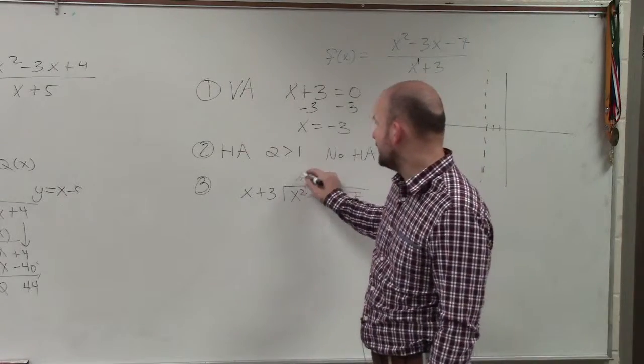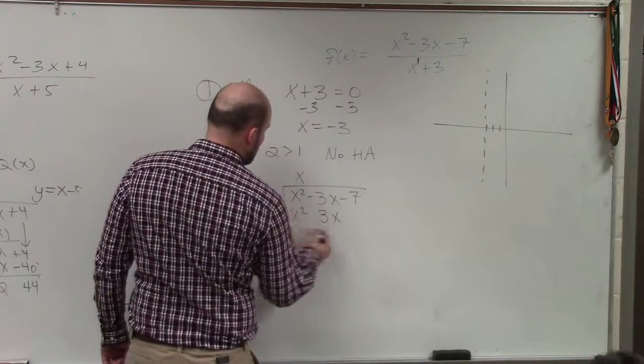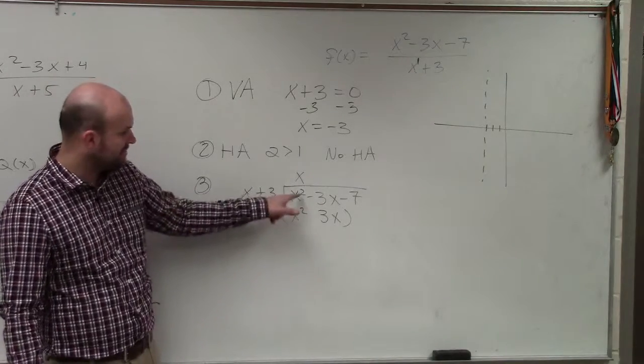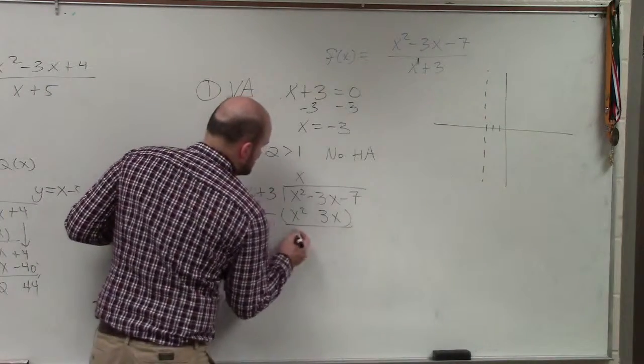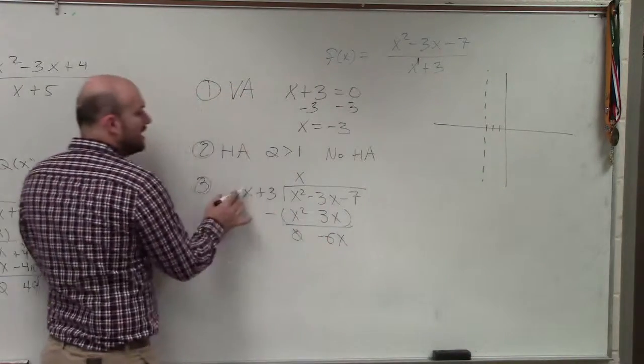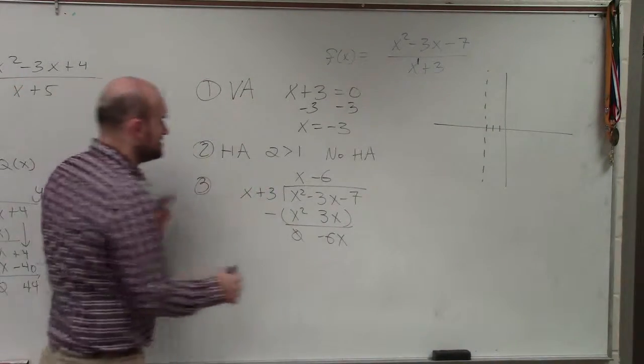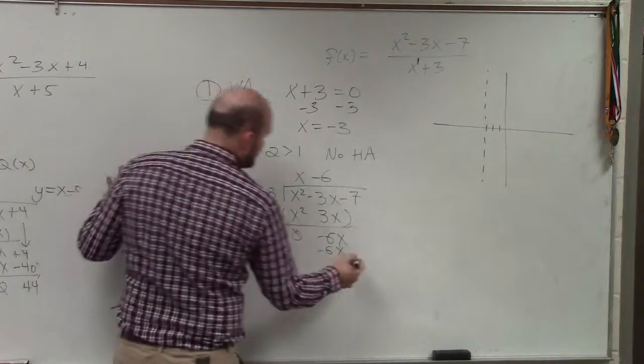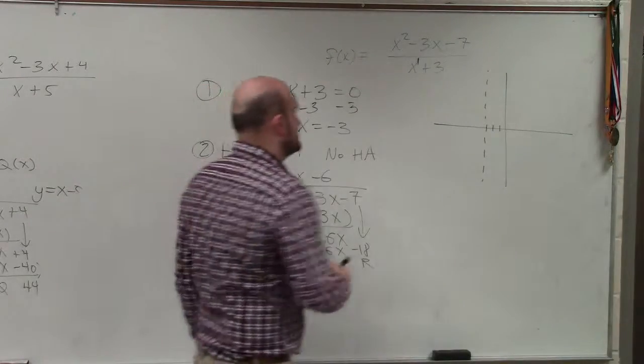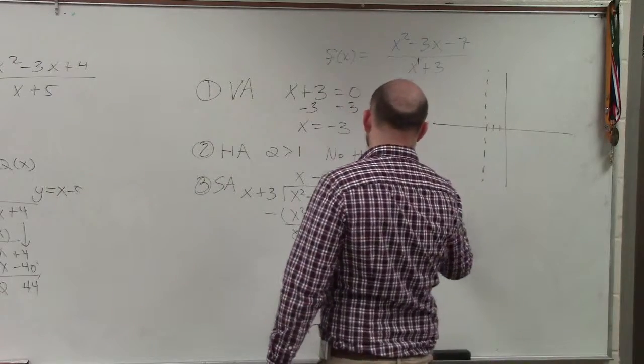x divides into x squared x times. Multiply x times x is x squared. x times 3 is 3x. Remember, you're subtracting the whole row. So you can distribute and make that a positive. Or you can say x squared minus x squared is 0. Negative 3x minus 3x is a negative 6x. x divides into negative 6x negative 6 times. Negative 6 times x is a negative 6x. Negative 6 times 3 is going to be a negative 18. You have a remainder, but we don't care about remainders. My slant asymptote is y equals x minus 6.